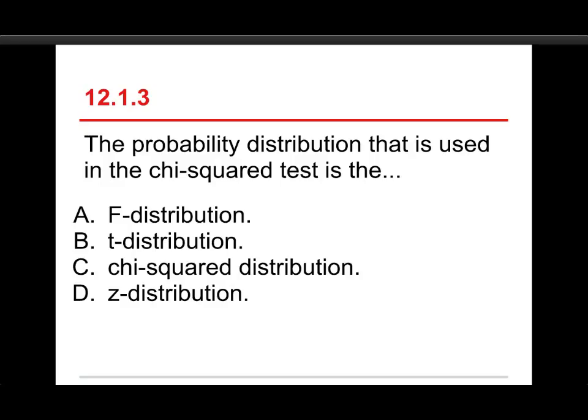The third one. The probability distribution that is used in the chi-squared test is the F-distribution, the t-distribution, the chi-squared distribution, or the z-distribution.